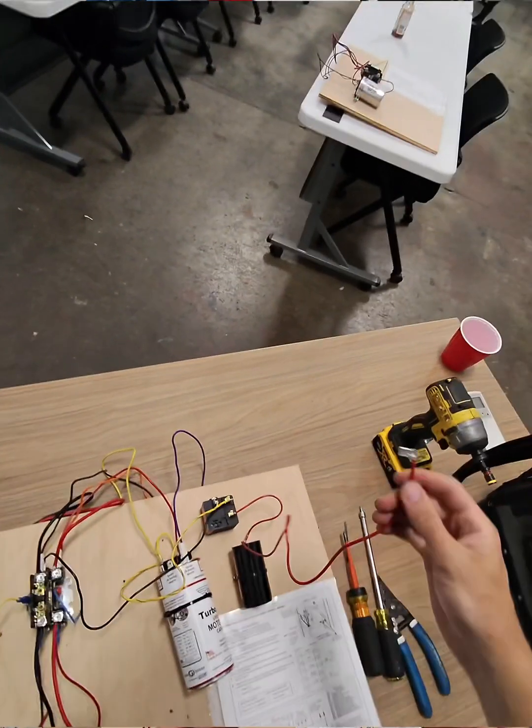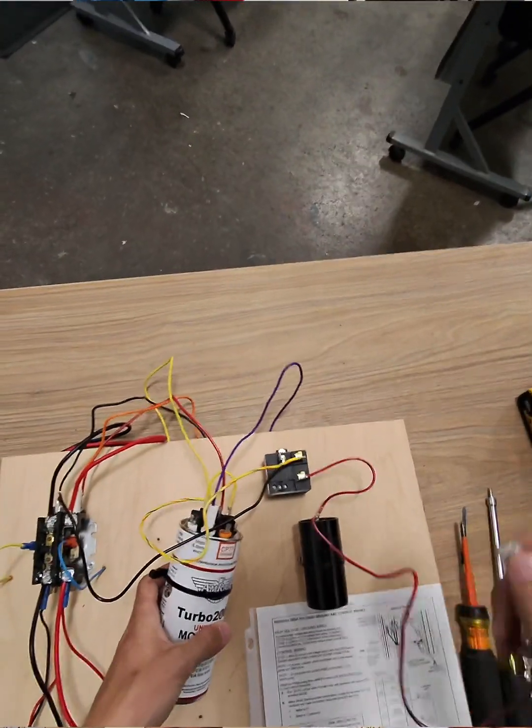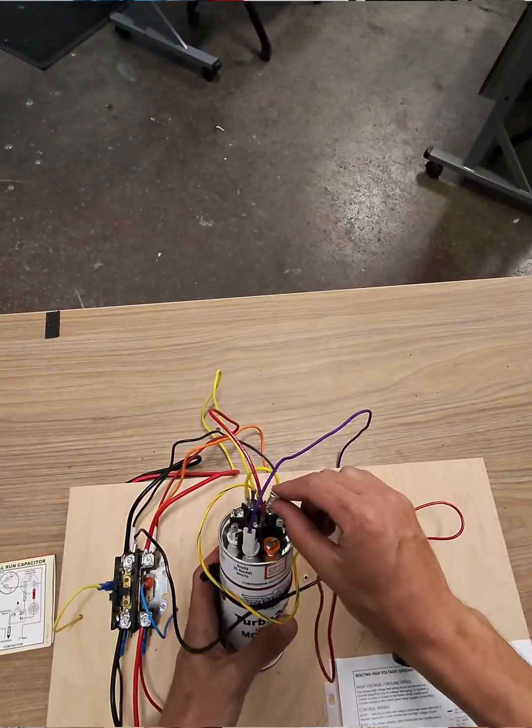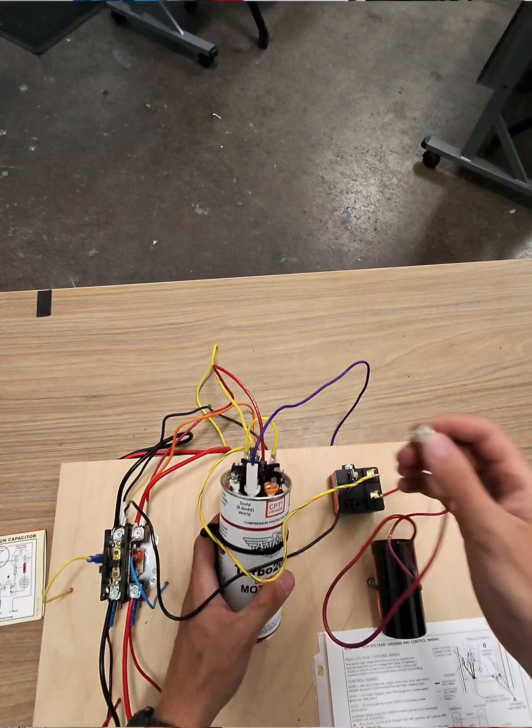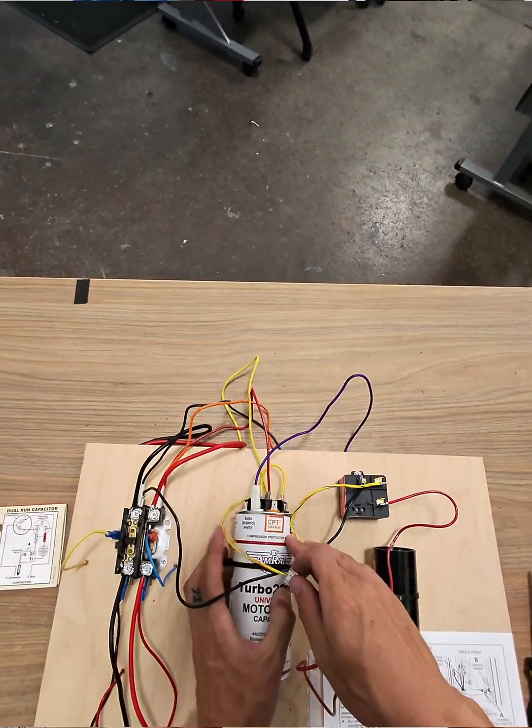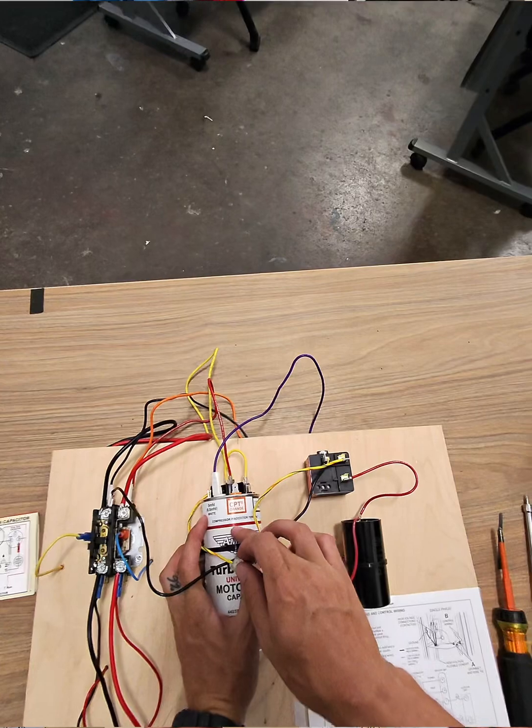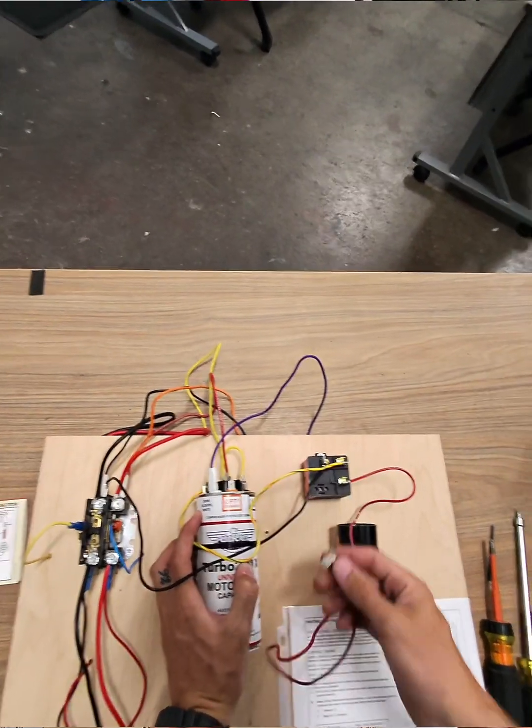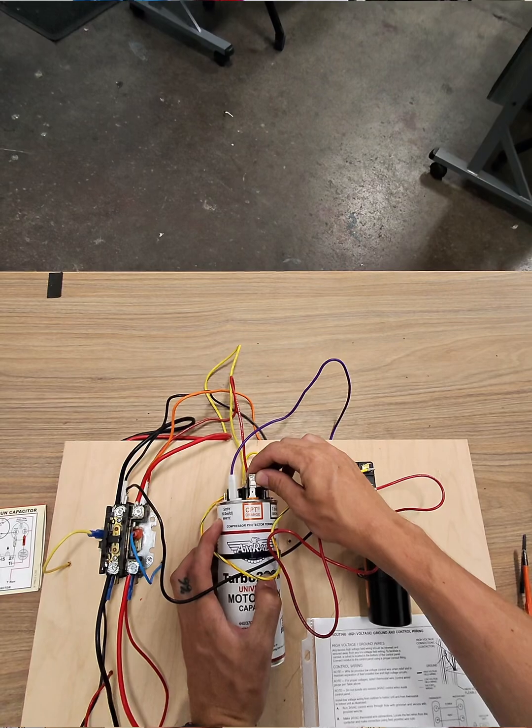Your last wire is going to be the red wire, and normally on the dual-capacitor, it's going to go to your common. But a turbo-capacitor has a CPT, Compressor Protection Terminal, and that's where your red wire is going to go.